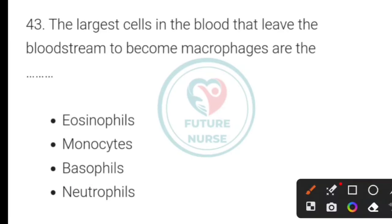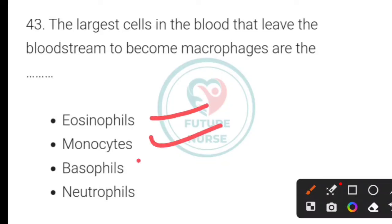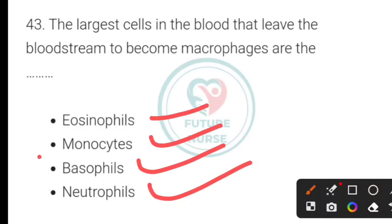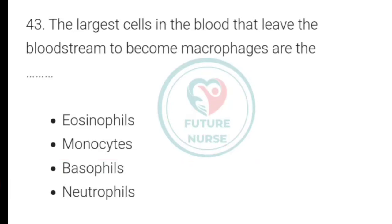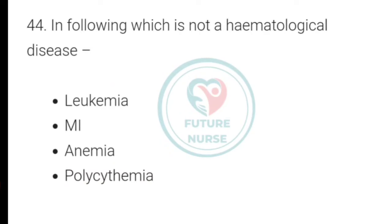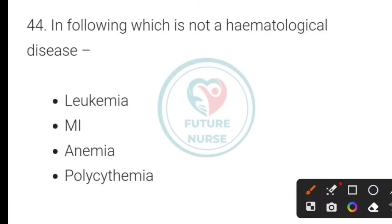The largest cells in the blood that leave the bloodstream to become macrophages are which of the following? Options: eosinophils, monocytes, basophils, or neutrophils. The correct option is monocytes.